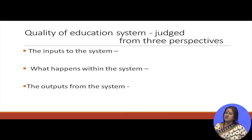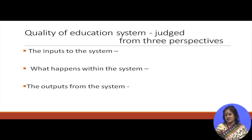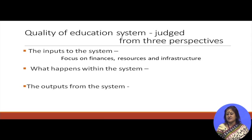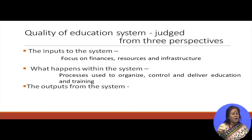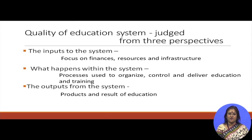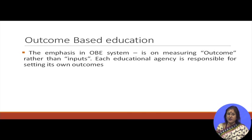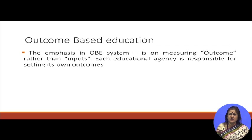The quality of an education system is judged from three perspectives: the inputs to the system, what happens within the system, and the outputs from the system. Inputs mainly focus on finances, resources and infrastructure. What happens within the system covers processes used to organize, control and deliver education and training. Outputs are the products and results of education — and the output is very important. Outcome based education emphasizes measuring outcomes rather than inputs, and each educational agency is responsible for setting its own outcomes.